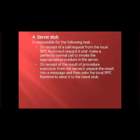The server stub, like the client stub, is on the server side. On receipt of a call request from the local RPC runtime, it unpacks the message and makes a normal call to invoke the appropriate procedure in the server. On receipt of the result of procedure execution from the server, it packs the result into a message and asks the local RPC runtime to send it to the client stub.